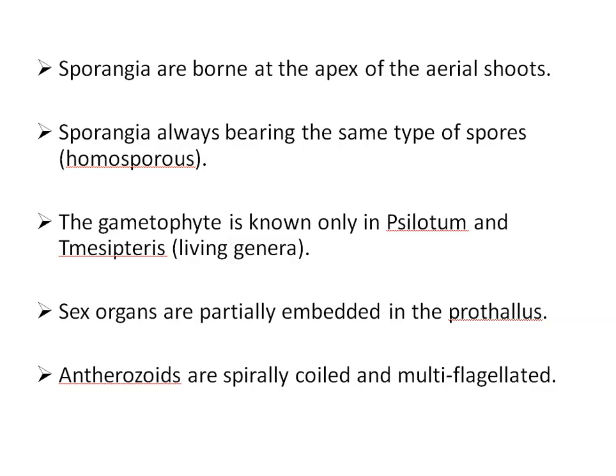Sporangia are borne at the apex of the aerial shoot and always bear the same type of spores — that is, they are homosporous. Gametophyte is known only in Psilotum and Tmesipteris; Tmesipteris is a fossil and Psilotum is a living genus, while gametophyte is unknown in other Psilophyte forms. Gametophyte is cylindrical or branched, subterranean, and colorless. Sex organs are partially embedded in the prothallus. Antheridia are spirally coiled and multiflagellate. Sporangia are either solitary — in the case of Rhynia, a fossil pteridophyte — or in groups and terminal in position, but there is nothing like a sporophyll.